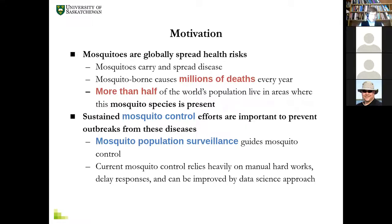Mosquito-borne illness, despite advances in bed nets, anti-malarial drugs, and so on, still causes millions of deaths each year. Whether it's dengue fever, malaria, or other high-burden illnesses, there are very high levels of morbidity and mortality from mosquito-borne illness. Mosquito control efforts are important for preventing outbreaks, whether in countries such as Canada or in Asia and Africa.